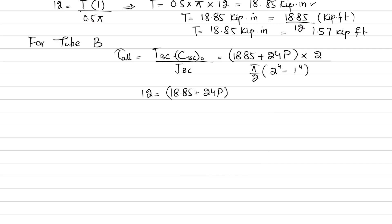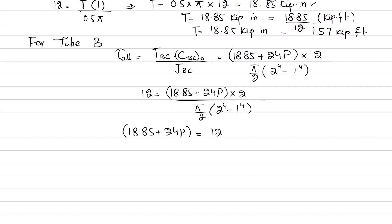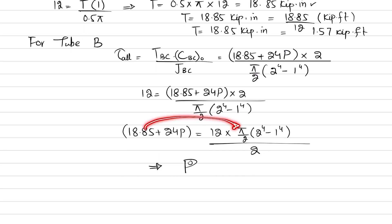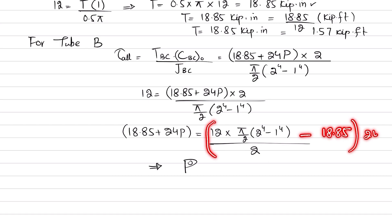Rearranging to solve for P: 18.85 + 24P = 12 · [π/2 · (2⁴ − 1⁴)] / 2. Bringing 18.85 to the other side and dividing by 24, we get P = 5.11 kips. This is the value of the couple forces P.